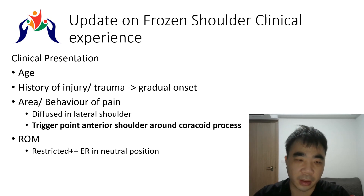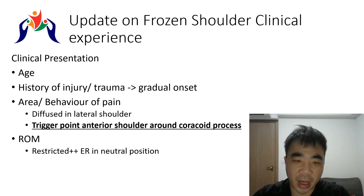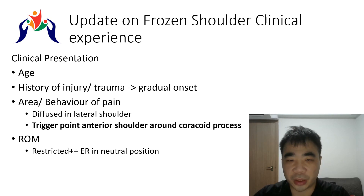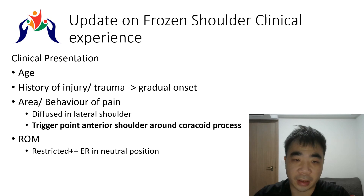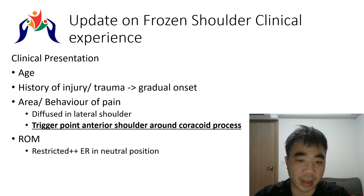As you know, frozen shoulder presents with restricted range of motion. Hand behind back is very signature but comes at a later stage. Flexion and abduction are decreased in many shoulder conditions. Being more specific, the first one I check is external rotation in the neutral position — if they are going into early frozen stage, you can find this range of motion decreases much faster than the others.